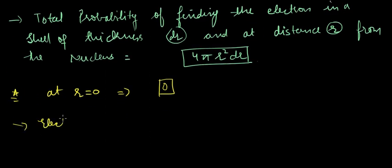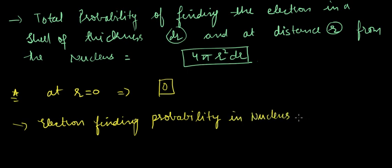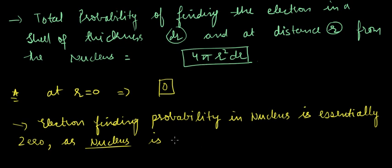Electron finding probability in nucleus is essentially zero, as nucleus is considered as a nodal point.